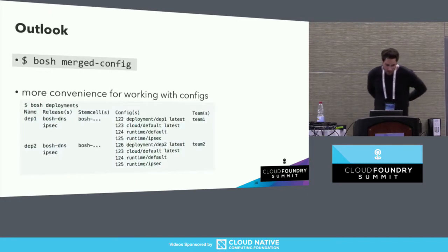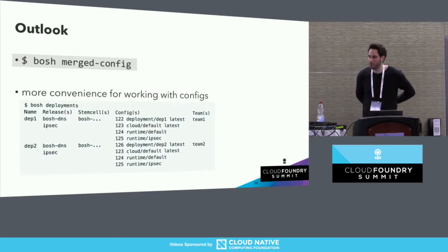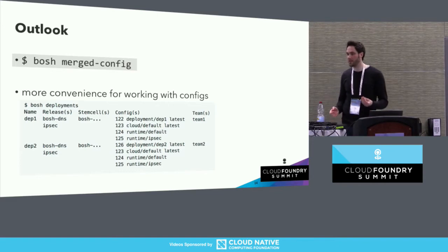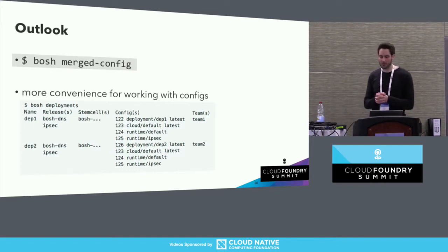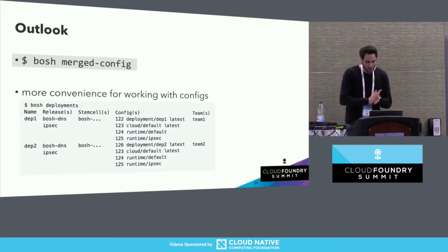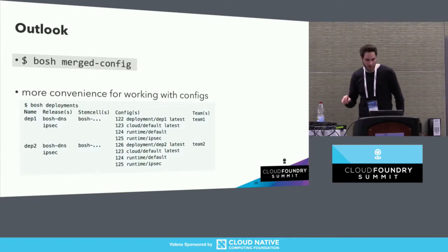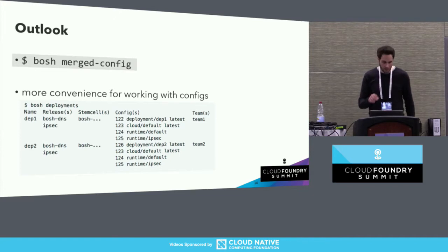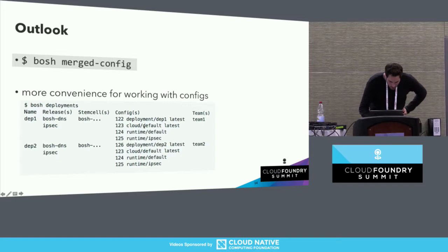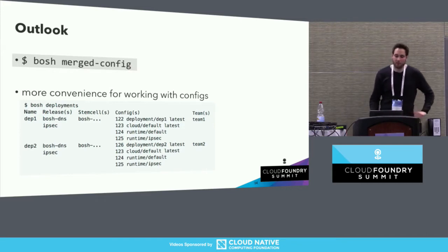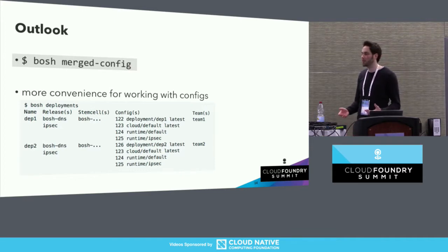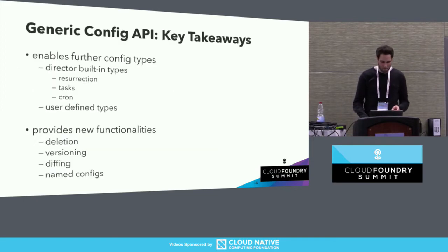You would upload the cron config with 'bosh update-config' passing the type 'cron,' and the BOSH director will pick it up and apply the configuration. In the future, we'll provide 'bosh merged-config' giving a preview of all the latest named configs for a specific type. The deployment manifest is essentially another configuration file, so in the future it could be just another config type, making the 'bosh manifest' CLI command obsolete. The 'bosh deployments' output would have a configs column showing all configs referenced by the deployment, including the deployment manifest itself.